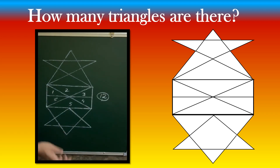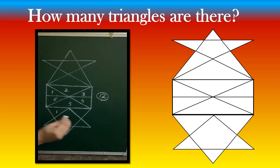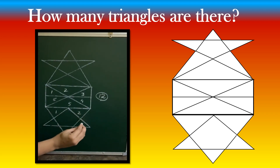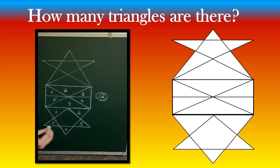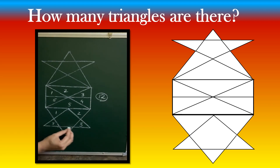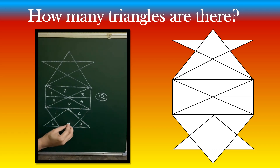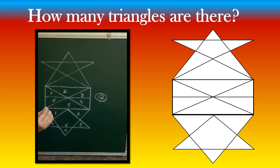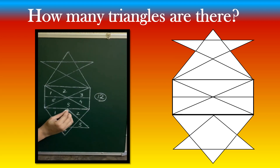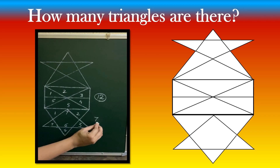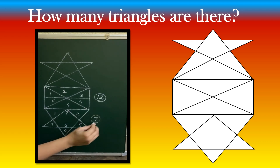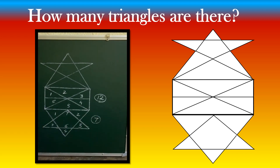Next, coming into the star: 1, 2, 3, 4, 5. Taking this as the base, the whole triangle — count it as 6. And with this base, the whole triangle — 7. So total 7 triangles in this star part.